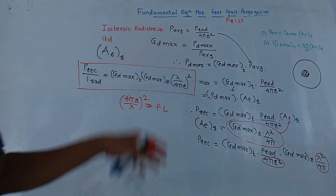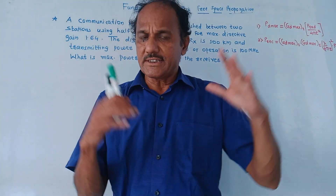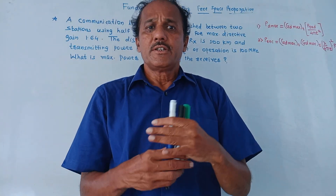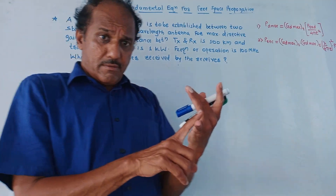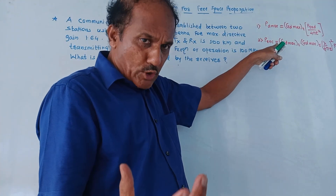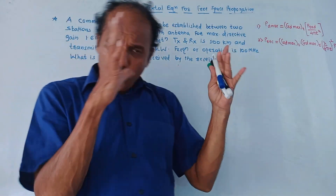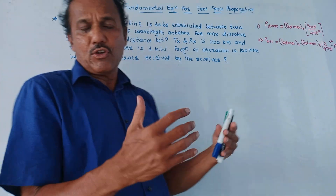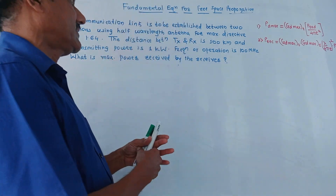Now let us solve a few numericals related to this. The numericals for free space propagation are straightforward — you need to remember the formula. We have just derived the equation for free space propagation, and without fail you need to memorize these two equations to attempt any numerical. Notes with a complete formula list and question bank have been uploaded; if you haven't downloaded the app yet, please do so — I will provide the link in the description.